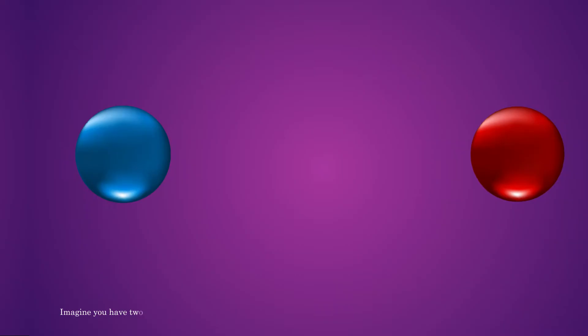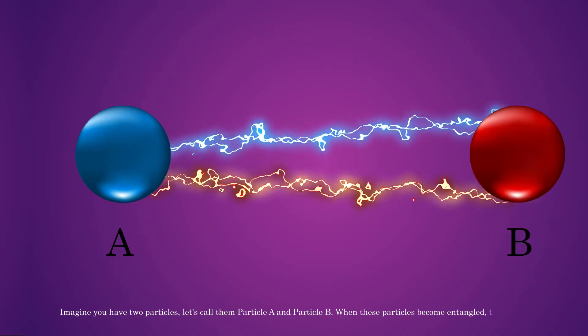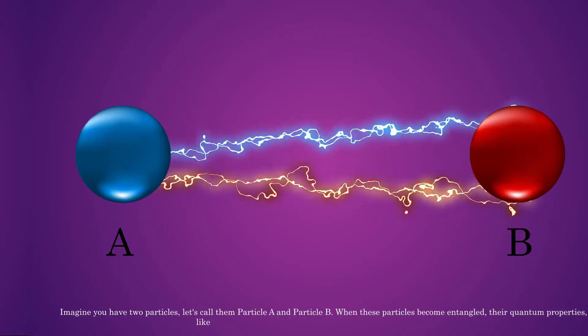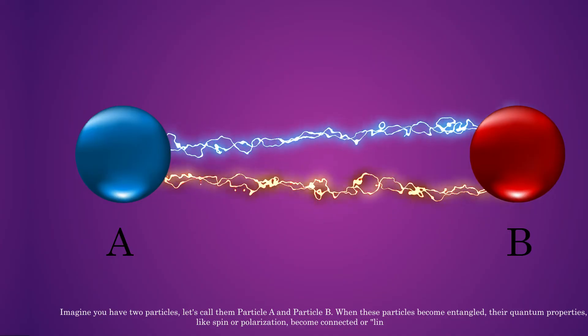Imagine you have two particles, let's call them particle A and particle B. When these particles become entangled, their quantum properties, like spin or polarization, become connected or linked to each other.